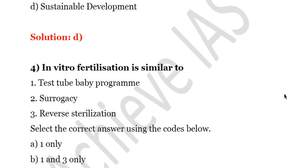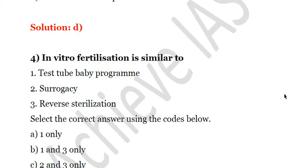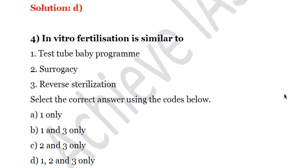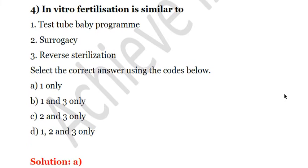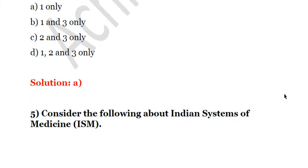Fourth question: in vitro fertilization is similar to — first, test tube baby program; second, surrogacy; third, reverse sterilization. The answer is only one, that is the test tube baby program. In vitro fertilization is associated with the test tube baby program. The solution is A. Let's move on to the next question.